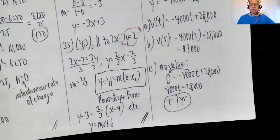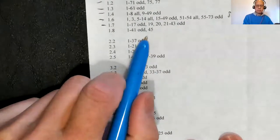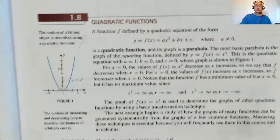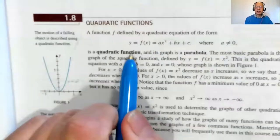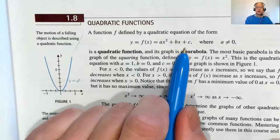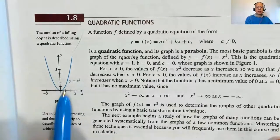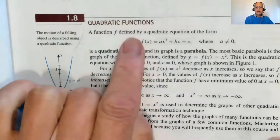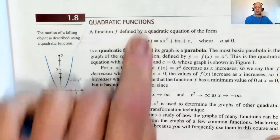That was most of the problems from 1.7. Now I want to introduce section 1.8, which is our last section for the test — it's on quadratic functions. So let me at least give you the introduction to save time tomorrow and Thursday. A quadratic equation looks like y = Ax² + Bx + C, where A ≠ 0. The graphs are parabolas, the easiest being y = x². If we set this equal to zero, we'll have the quadratic formula.